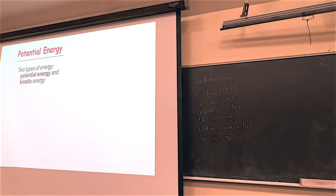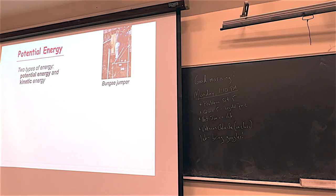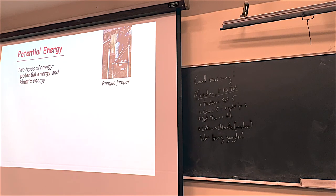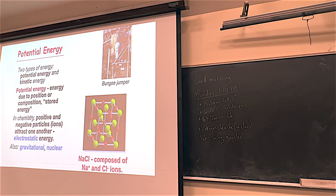In addition to energy, you have to know if the energy is active energy or energy inside something ready to be released. We're going to talk about potential energy - the energy inside something ready to be released - and kinetic energy, which is active energy. A bungee jumper on the edge of a platform has huge amounts of potential energy. In chemistry, potential energy is energy stored inside the bonds - like sodium chloride with its alternating ionic structure has a lot of this energy stored inside.